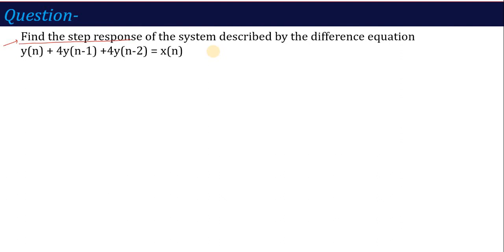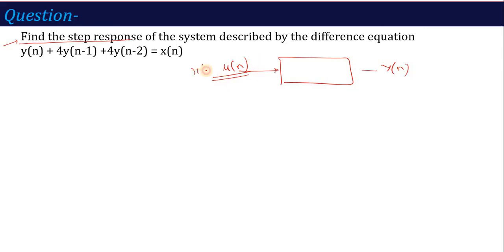If you remember, we talked about step response. In an LTI system, if the input is the unit step function x[n] = u[n], then the output y[n] calculated is called the step response. Just as when the input is an impulse function the output is called the impulse response, similarly when the input is the unit step function, the output response y[n] is the step response.